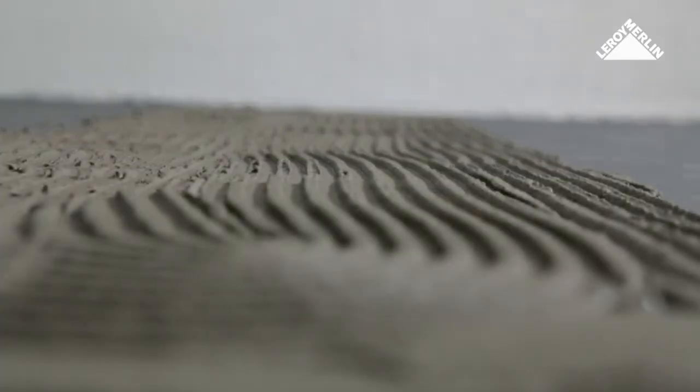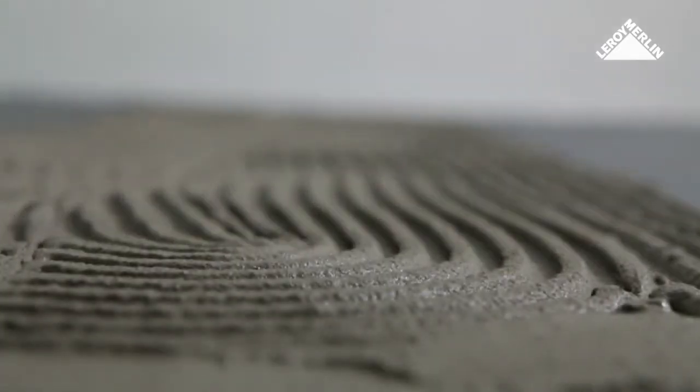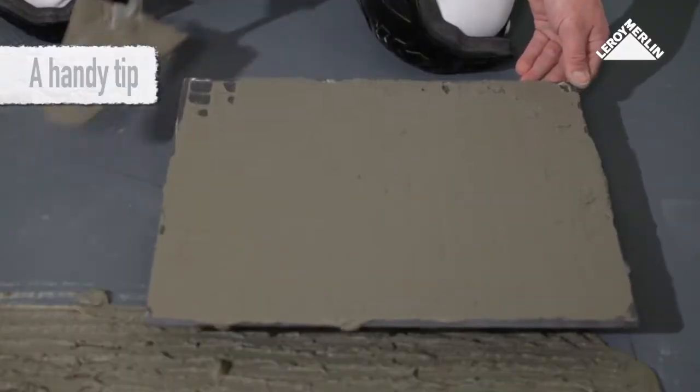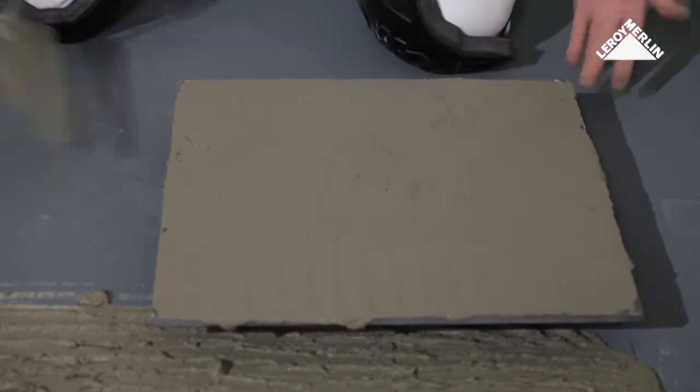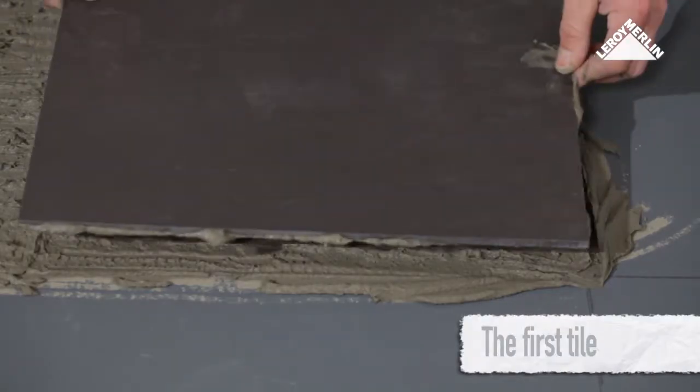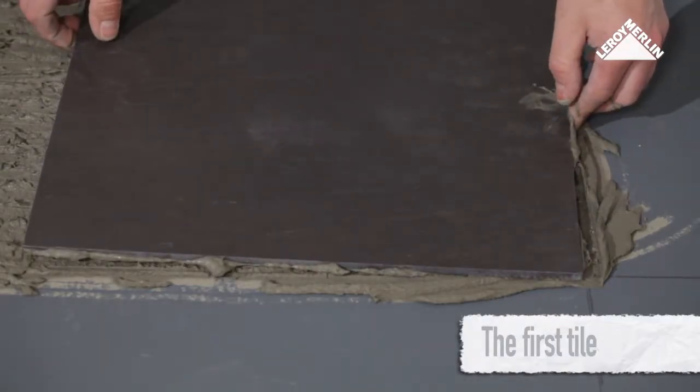For tiles that are less than 25 centimeters square, use a 6 or 8 millimeter notch spatula. Score the adhesive to get the right degree of thickness. If your tiles are more than 30 centimeters square, spread adhesive on the back of the tiles too.